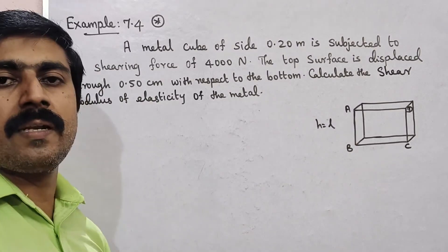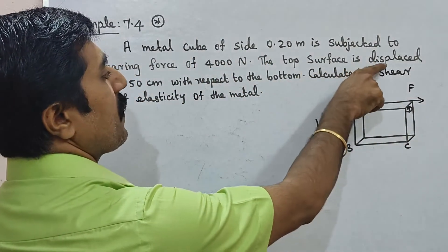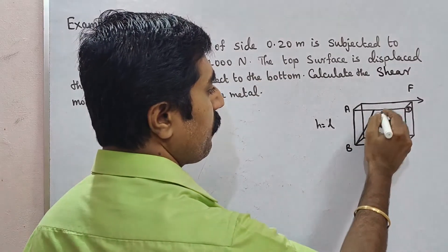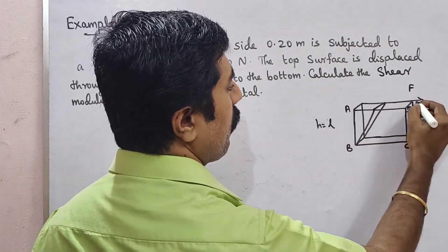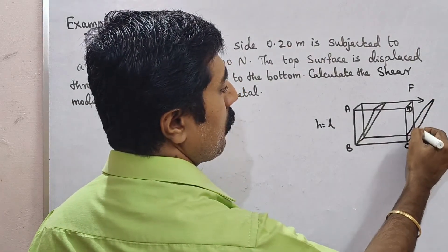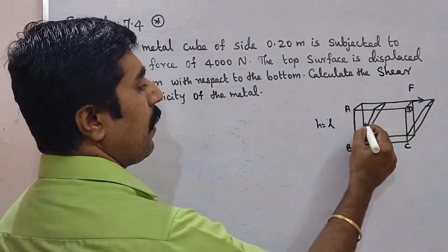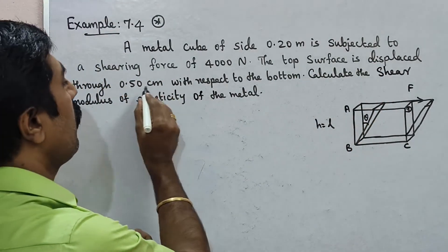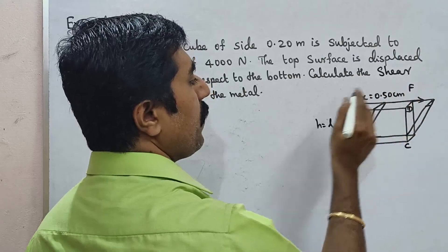The shearing force is a tangential force applied to the surface. The top surface is displaced with respect to the bottom. The displacement is along the x-axis: x is equal to 0.50 centimeters.